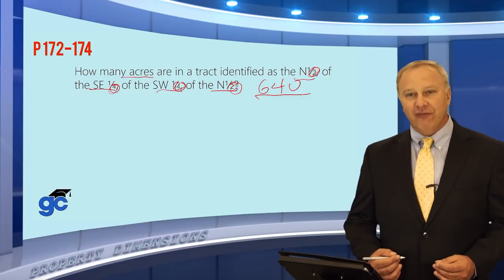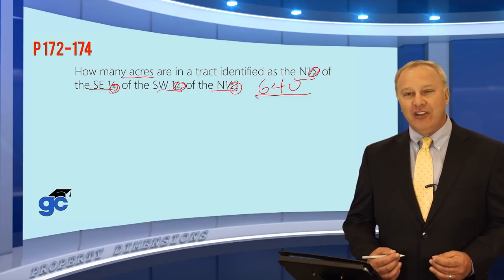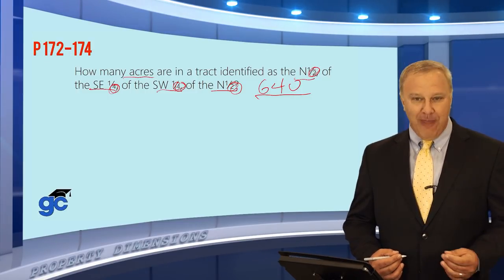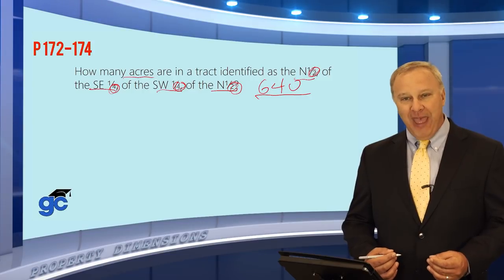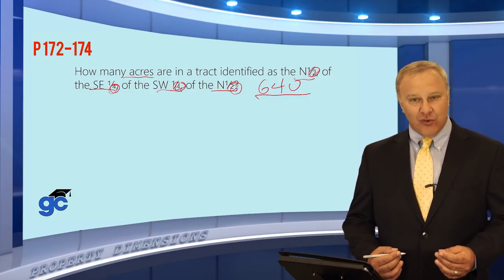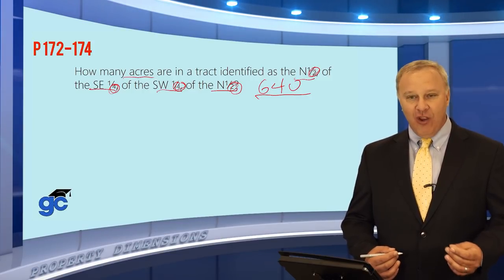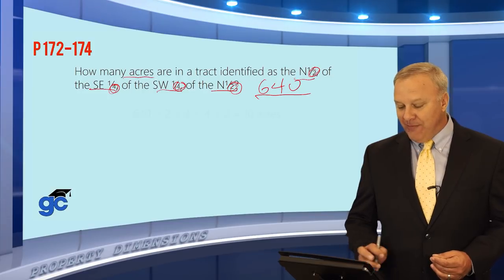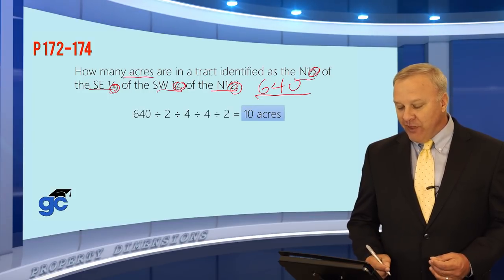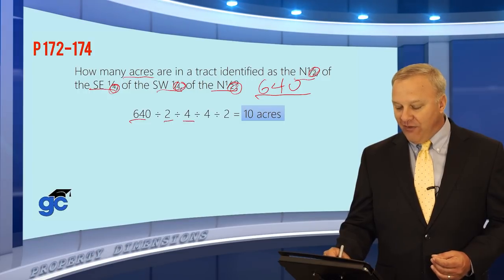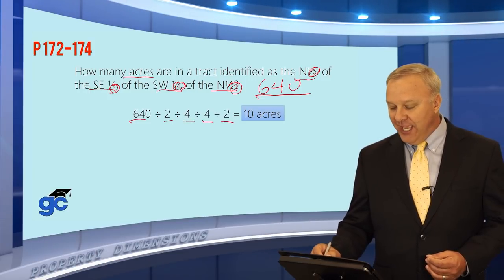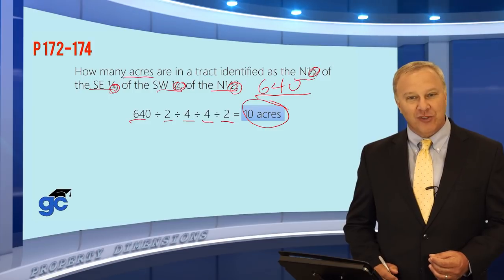The only time order matters is if you have to identify the parcel on a map — then you always start from the back, the 640-acre section, and work towards the front. For the math: 640 ÷ 2 ÷ 4 ÷ 4 ÷ 2 gives you 10 acres in this parcel.